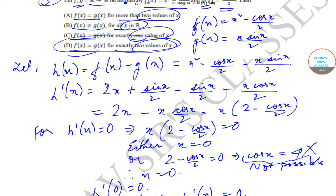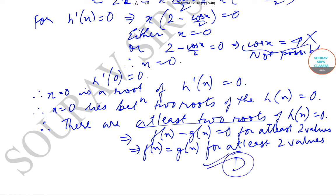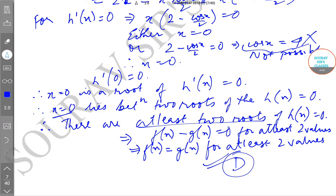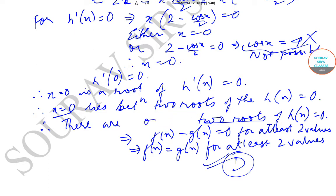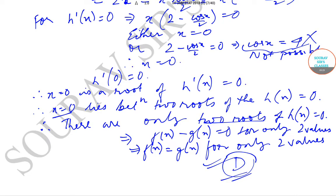As you can see, this is option D, and option D is the correct answer. Since we are getting only one root of h'(x), there are only two roots of h(x), so we can replace 'at least two' with 'exactly two'. This is option D. We have solved question number 12 from the IIT JAM Mathematical Statistics question paper of 2018. We will solve the next questions in subsequent videos. Till then, keep watching Soros's classes for more solutions and content. Thank you very much.